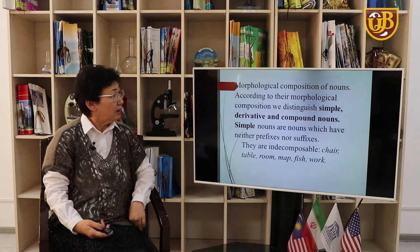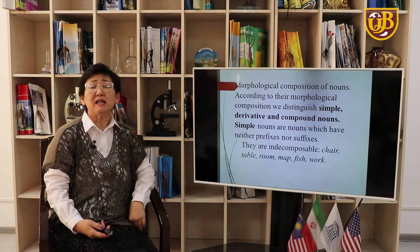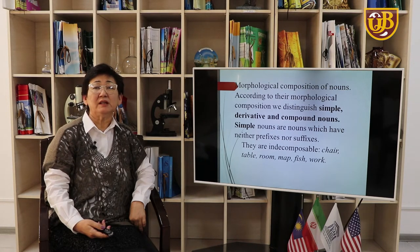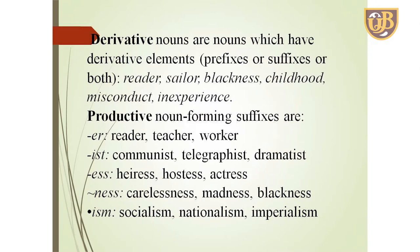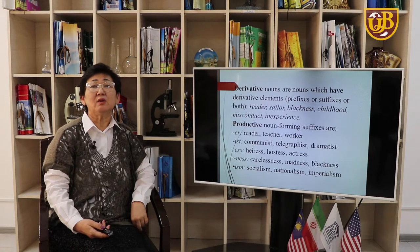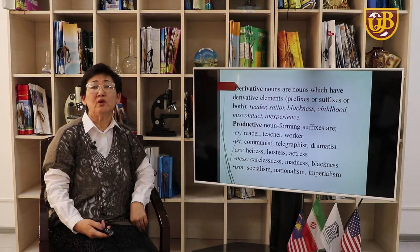Morphological composition of nouns. According to morphological composition, we distinguish simple, derivative, and compound nouns. Simple nouns have no prefixes or suffixes — they are indecomposable — for example, chair, table, room, map, fish, work. You cannot divide them into meaningful parts. Derivative nouns have derivative elements such as prefixes and suffixes — for example, reader, sailor, misconduct. We have a number of productive noun-forming suffixes.